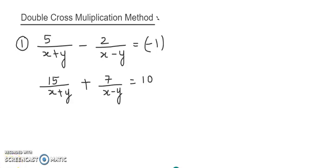In continuation with the video of cross multiplication, I am going ahead using the same cross multiplication but this time it is double. We have to change this particular given equation into a reducible form into a simultaneous equation in two variables, and then we will apply the cross multiplication. In these type of questions, we have to apply it twice.